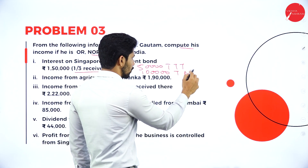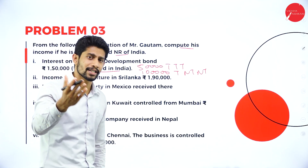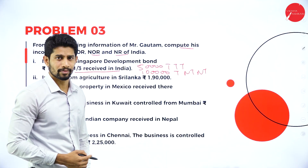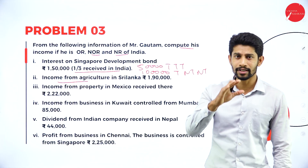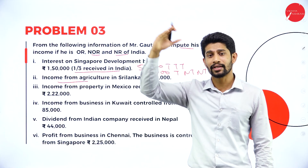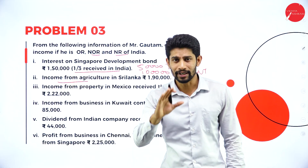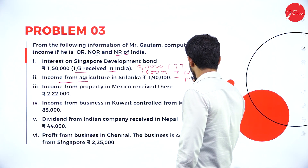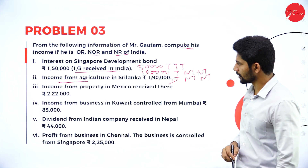The remaining 1 lakh is not received in India; it is considered foreign other than business income — treatment is taxable, not taxable, not taxable. Next: income from agriculture in Sri Lanka. The amount is not received in India — received there itself. So it is a foreign income — foreign other than business income — treatment is taxable, not taxable, not taxable.